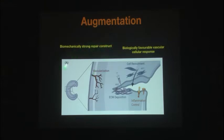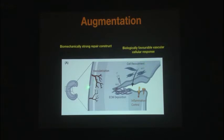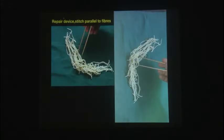You need a biomechanically strong construct and a biologically favourable vascular response. You want vascularization, cell recruitment, and control of the inflammation that sets in. Remember this: you may have tricks for vascularization and cellular recruitment, but for white zone tears you also need to reduce inflammation. Newer orthobiologics are helping address this.